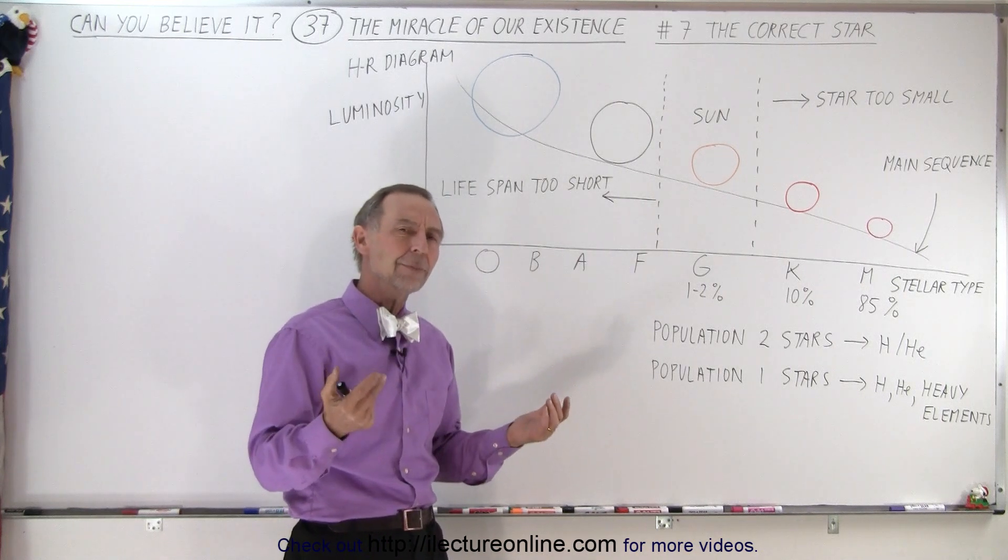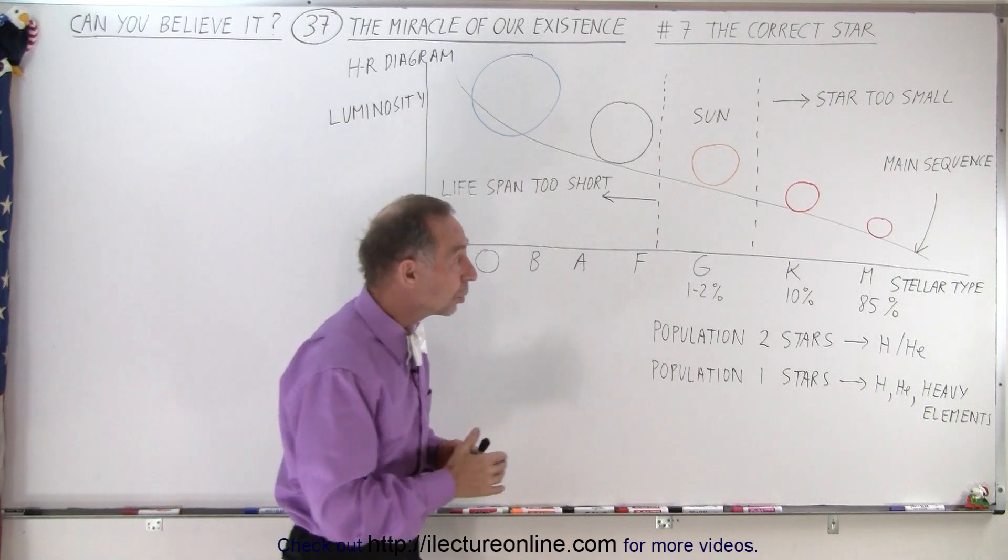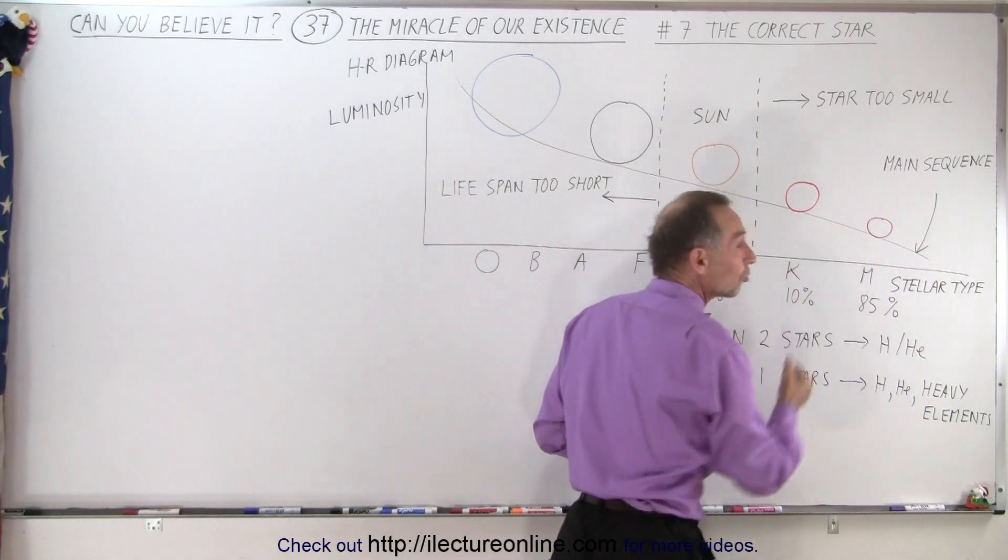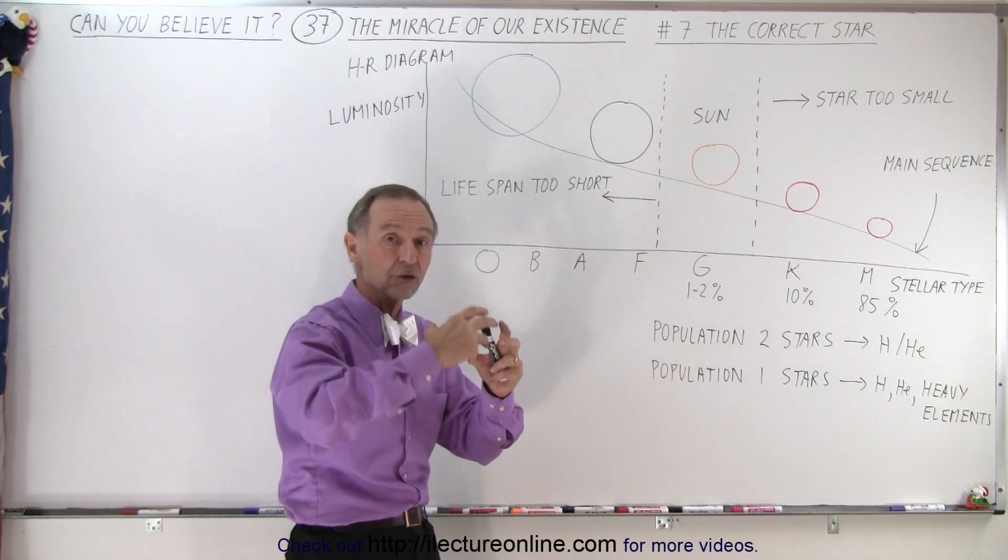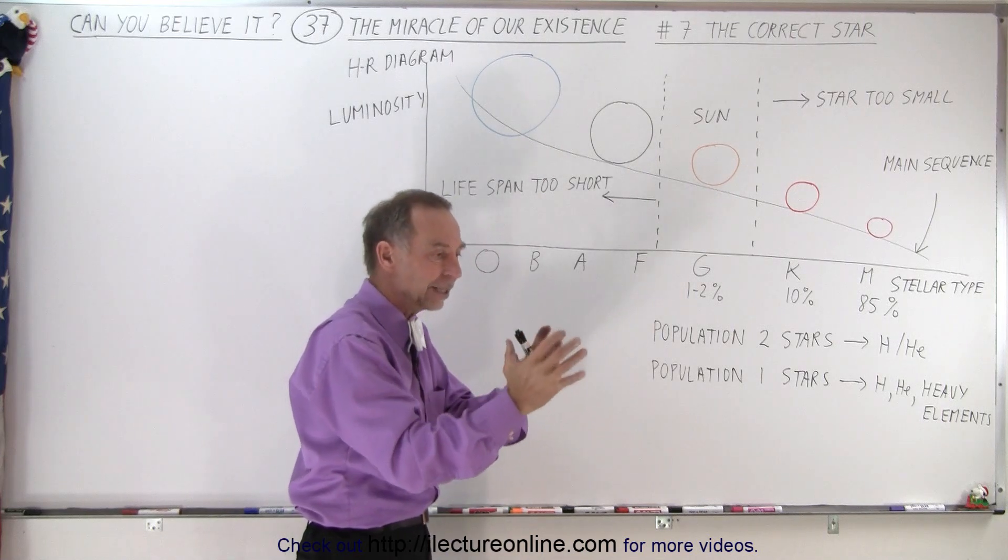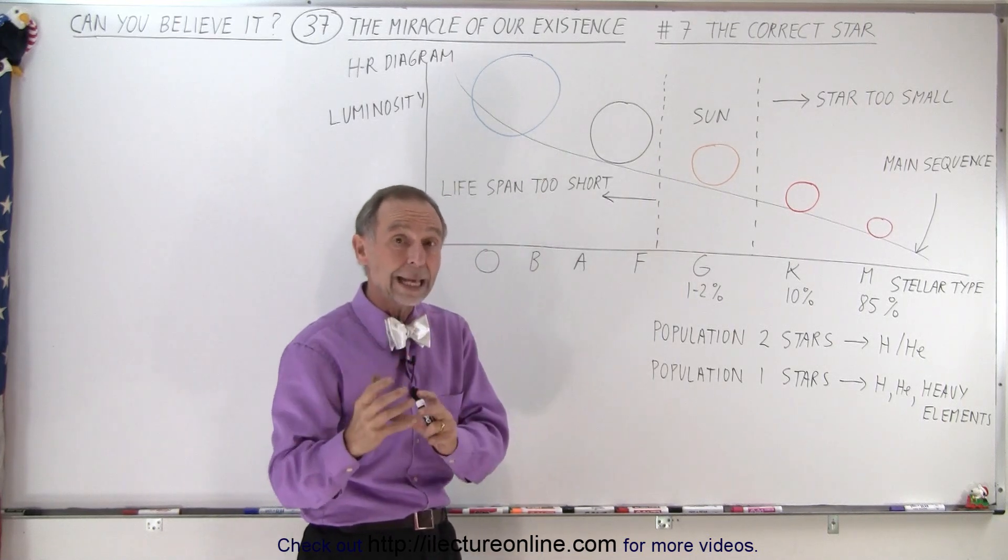Well, when they're that small, the Goldilocks zone is so close to the star that the planet would probably be tidally locked to the star. Just like Mercury is tidally locked to the star, so would those planets.